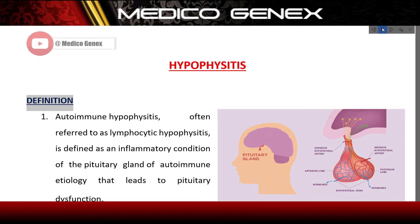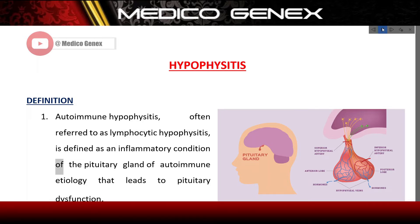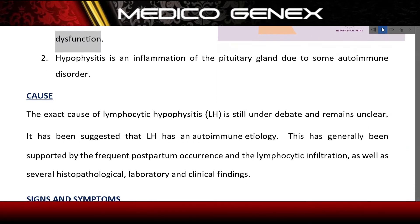Hypophysitis definition: autoimmune hypophysitis, often referred to as lymphocytic hypophysitis, is defined as an inflammatory condition of the pituitary gland of autoimmune etiology that leads to pituitary dysfunction.